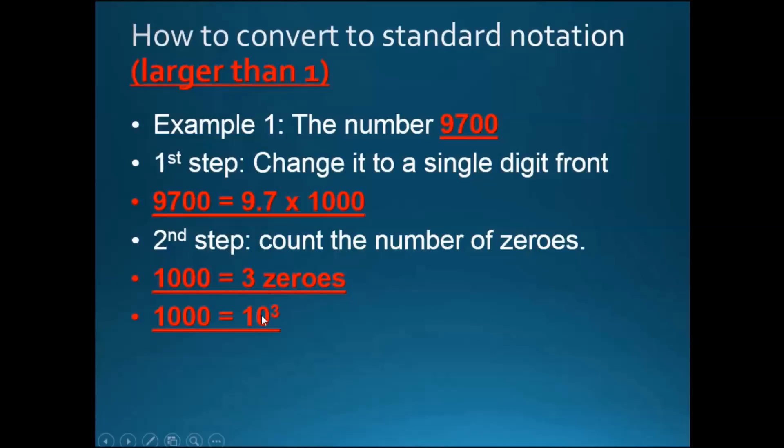So finally we can combine it together for the answer, which is 9700 equals 9.7 times 10 to the power of 3.